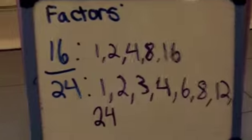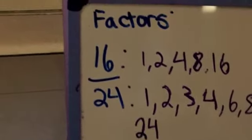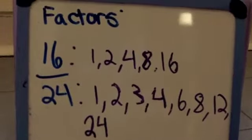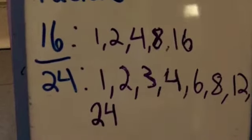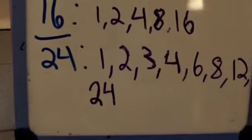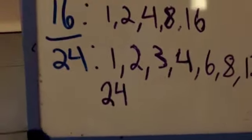Here I have written the factors of 16 and 24, the numerator and the denominator. The factors of 16 are 1, 2, 4, 8, and 16. The factors of 24 are 1, 2, 3, 4, 6, 8, 12, and 24.